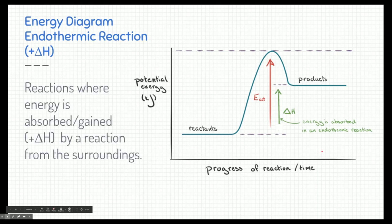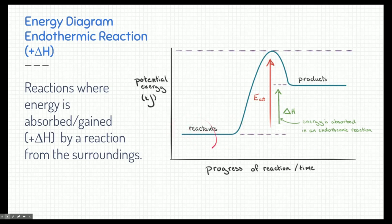Now let's look at the opposite — an energy diagram of an endothermic reaction. An endothermic reaction absorbs or gains energy, so we have a positive delta H. At the start, the reactants begin at a lower energy level. A significant amount of energy is needed to start this reaction, and eventually the products end up at a higher energy than the reactants. Ignoring the activation energy bump, the total energy change shows energy is being absorbed — a positive delta H.